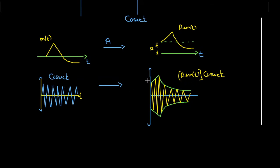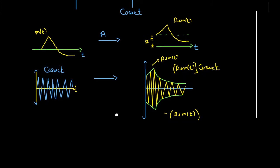When multiplied, we get the modulated signal (A + m(t))·cos(ωct). The green part represents the envelope: the positive envelope is +(A + m(t)) and the negative envelope is −(A + m(t)). The amplitude of this modulated signal varies with the message signal — that is why it is called amplitude modulation. The amplitude of the carrier wave is varied with respect to the message signal.